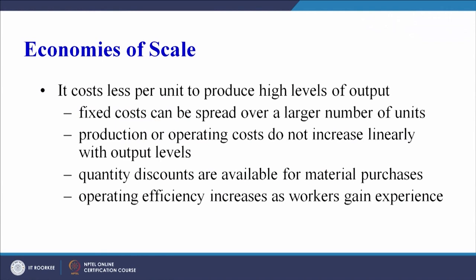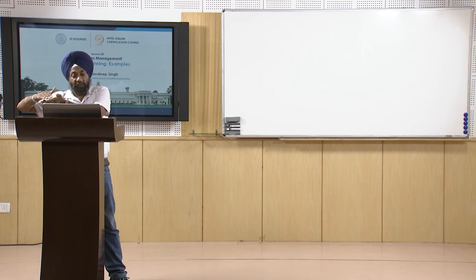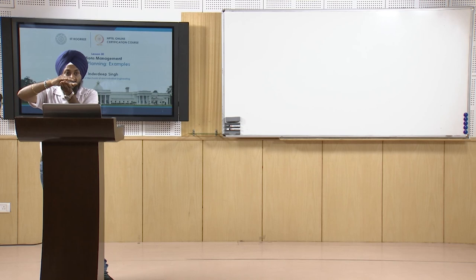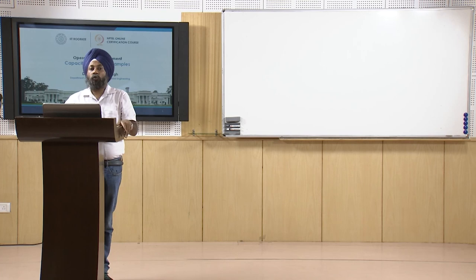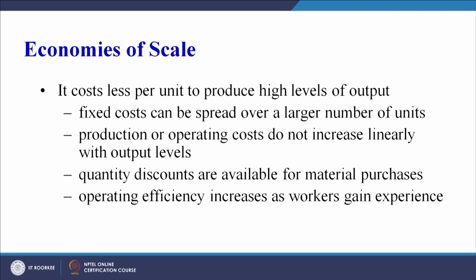Economies of scale means it costs less per unit to produce high levels of output. One important point: the cost per unit does not reduce linearly. As volume increases to some extent the cost per unit reduces, but after the best operating level the cost per unit starts to increase again. Why does cost per unit reduce? Because fixed costs can be spread over a large number of units.